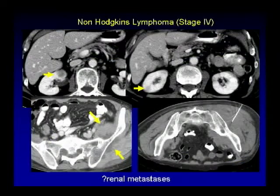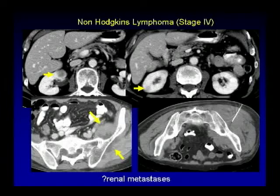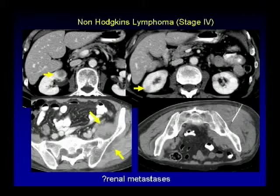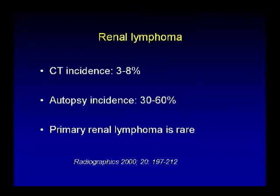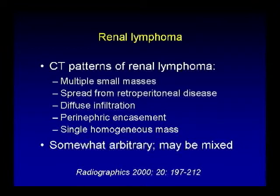Another case with multiple ill-defined masses in the right kidney and a large solid mass centered around the left iliac. Is this RCC with metastatic disease, another primary malignancy with renal metastasis, or lymphoma? This mass was biopsied and turns out to be non-Hodgkin's lymphoma. Renal lymphoma has a CT incidence of 3 to 8 percent with a much higher autopsy incidence. Primary renal lymphoma is rare. CT patterns include multiple small masses, spread from retroperitoneal disease, diffuse infiltration, perinephric encasement, or a single homogeneous mass.